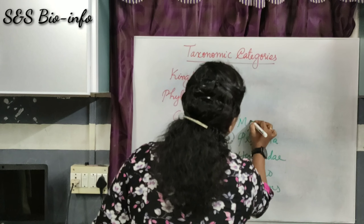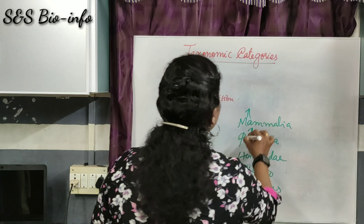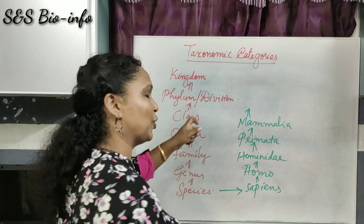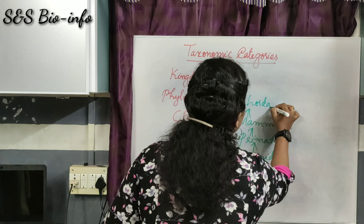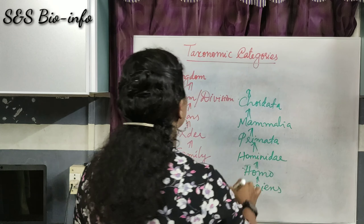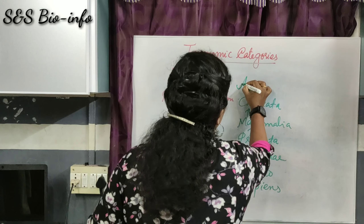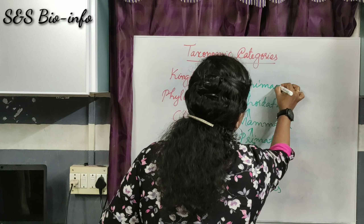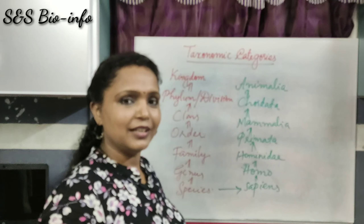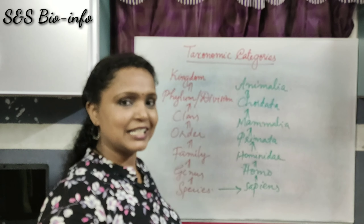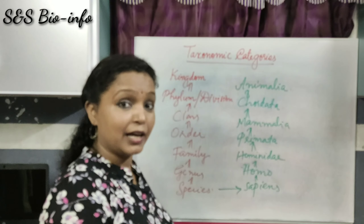The family Hominidae comes under the order Primata. The order Primata comes under the class Mammalia. Mammalia is included in the phylum Chordata, which is one of the phyla of the kingdom Animalia.